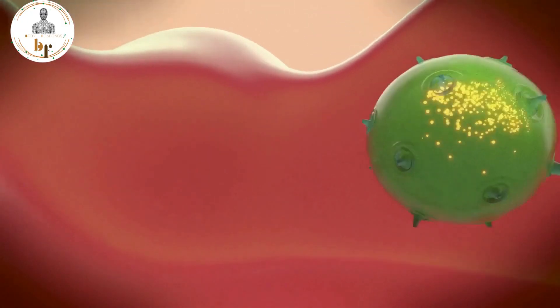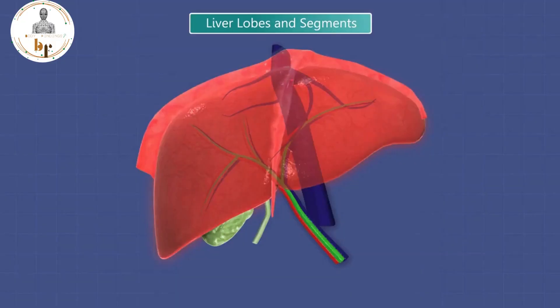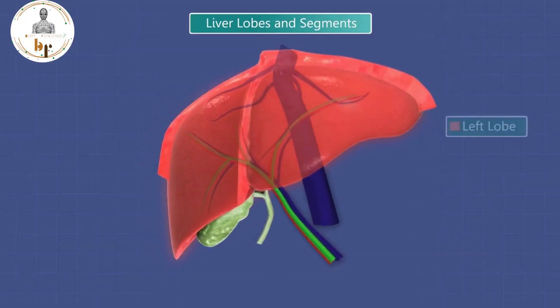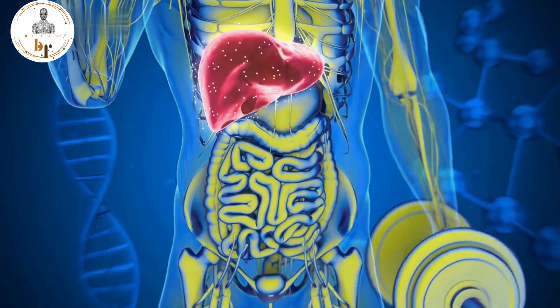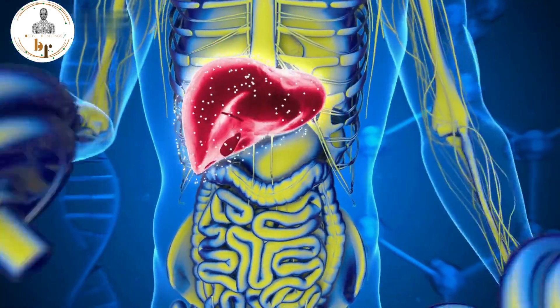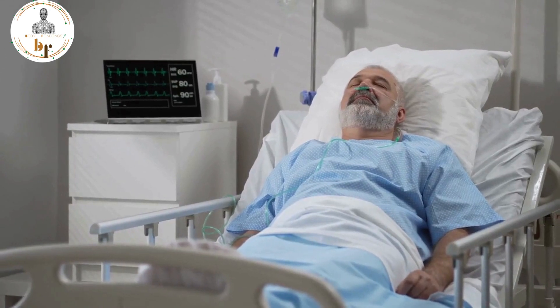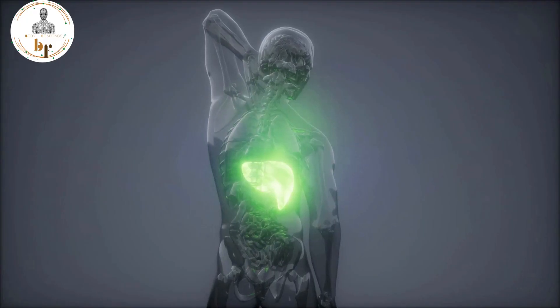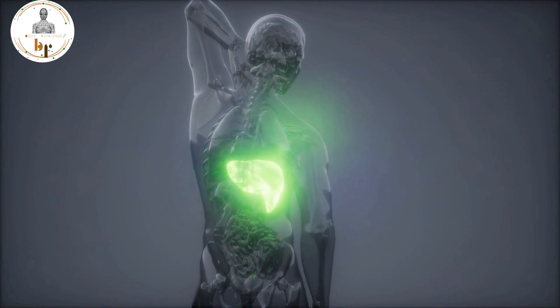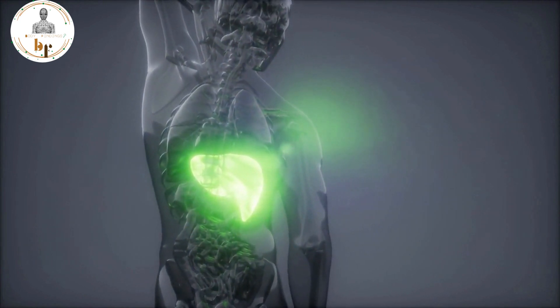Unhealthy toxins are removed from your blood by a healthy liver, which then pumps healthy blood into your body. Scar tissue develops as the liver is being harmed. The liver then needs to work harder to operate properly as more scar tissue grows, and it may finally stop working. Cirrhosis usually leaves permanent liver damage that cannot be reversed. However, further harm can be prevented and, in rare cases, reversed if liver cirrhosis is identified early and the cause is addressed.